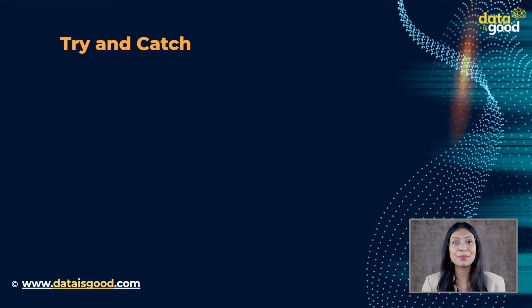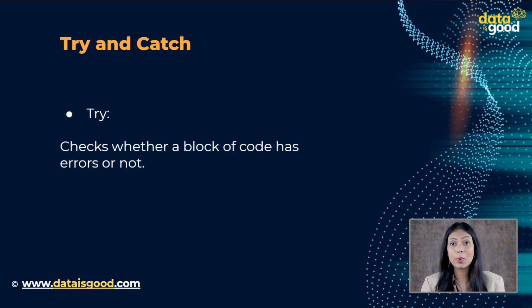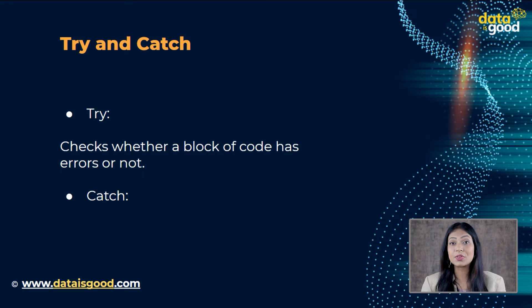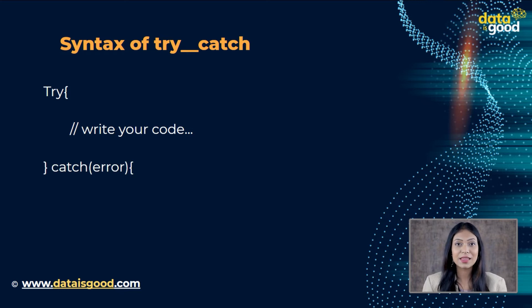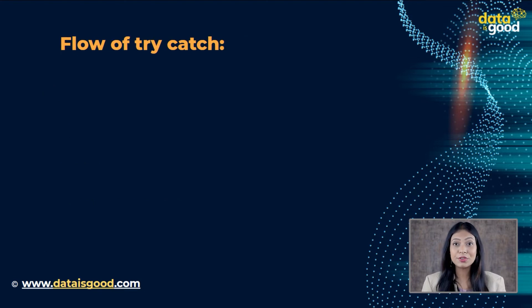The try-catch method allows us to catch errors inside a block of code. The try statement allows you to check whether a block of code has errors or not. If an error is generated in the try statement, the catch statement will handle the error. Here is the syntax: try — write your code — catch(error) — write your code.